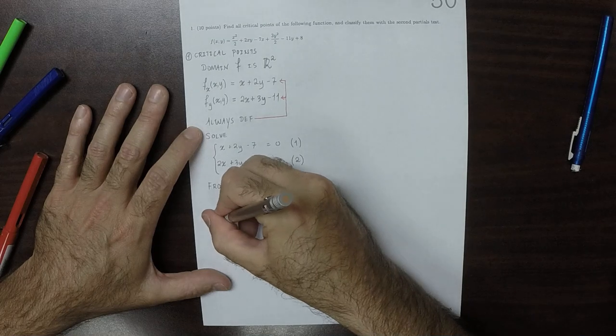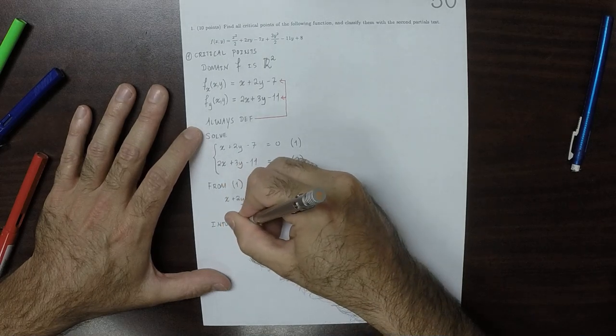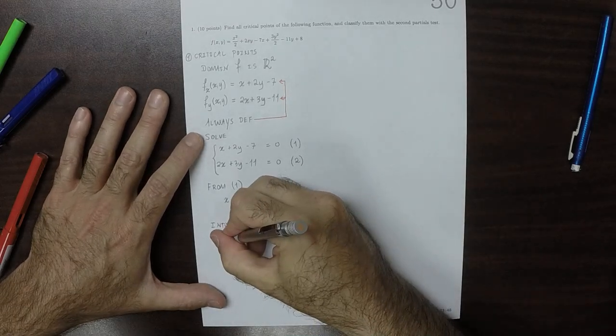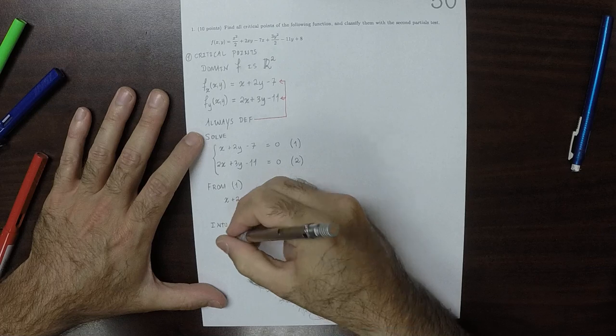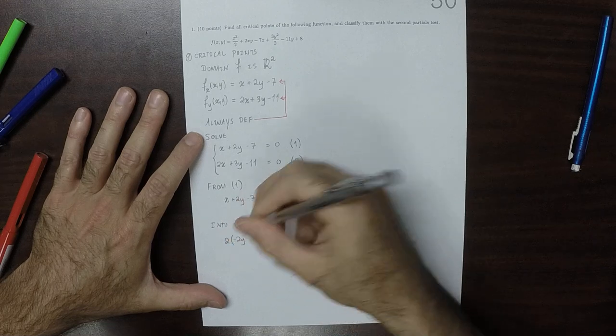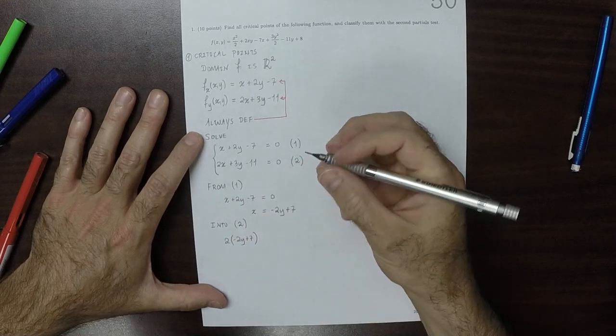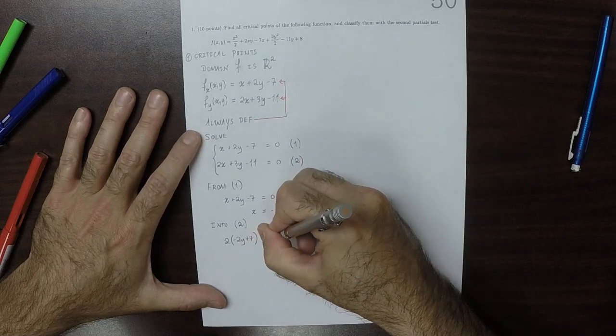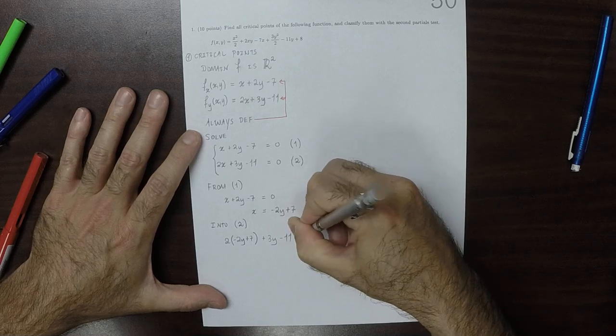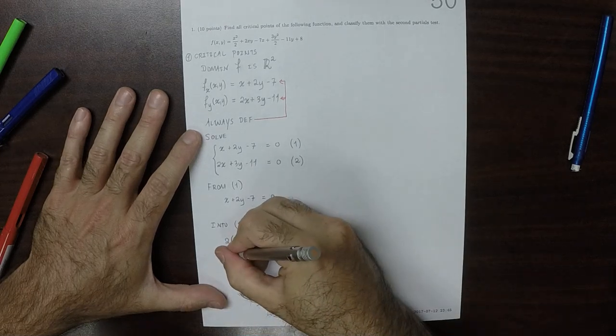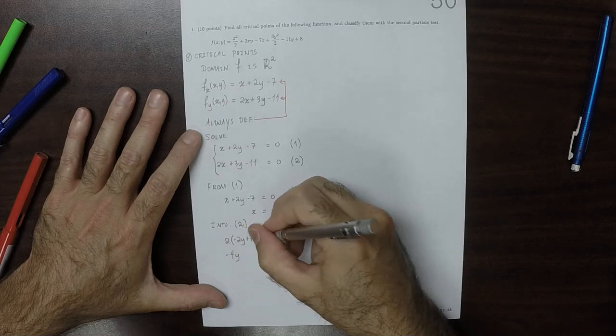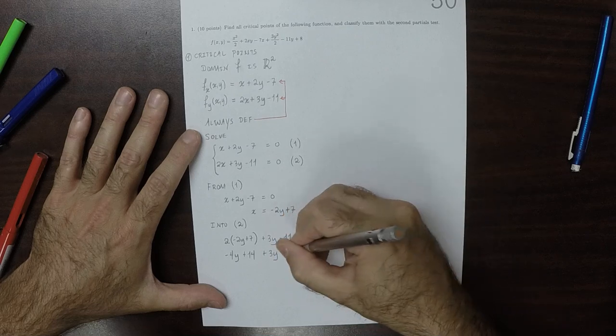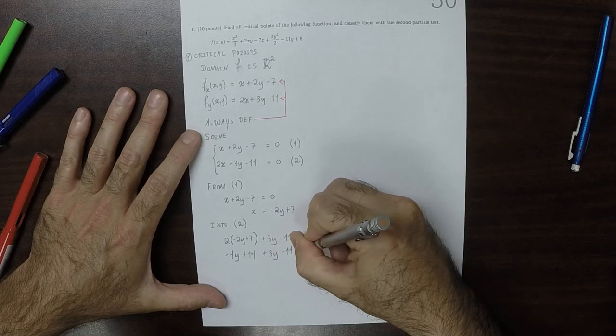Now I'll put that into equation 2. So 2, and then I'm going to put all that stuff in: negative 2y plus 7, and then plus 3y minus 11 is 0. Now I'll simplify this: negative 4y plus 14 plus 3y minus 11 is 0.